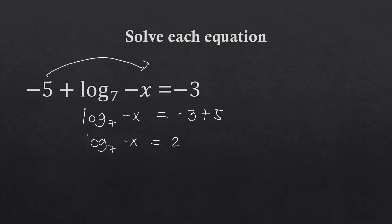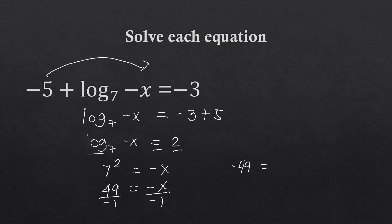We get log of negative x to the base of 7 equal to 2. Since we have a single logarithm on the left but no logarithm on the right, we express this in exponential form. The base is 7 and the exponent is 2, so 7 squared equals negative x. 7 squared is 49, so 49 equals negative x. Dividing by negative 1, x is equal to negative 49.